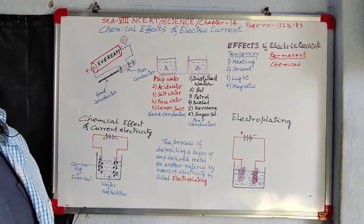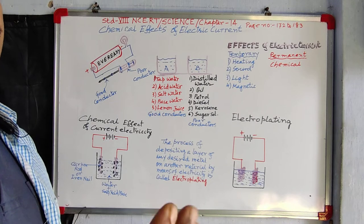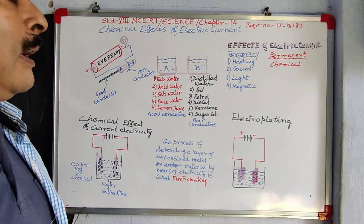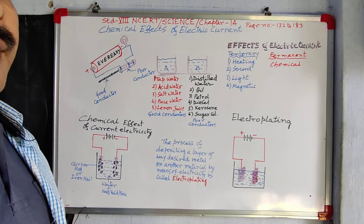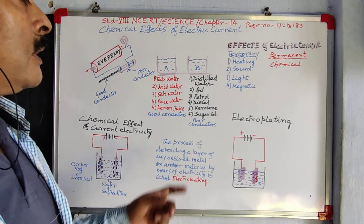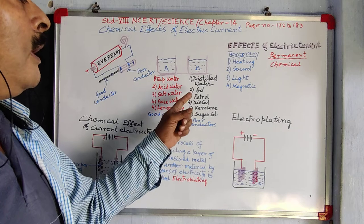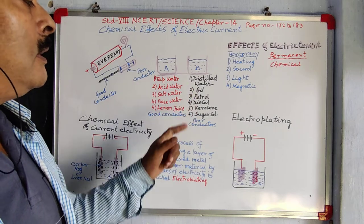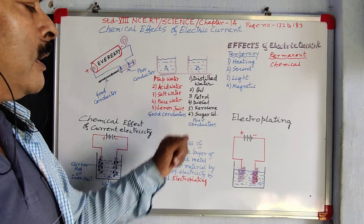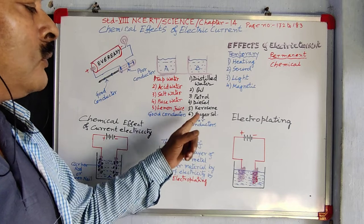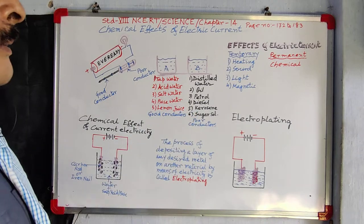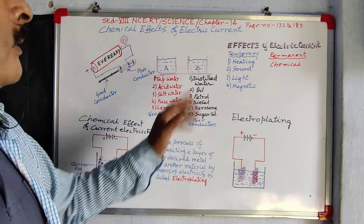Also in pot B: any edible oil — mustard oil, groundnut oil, cashew nut oil, olive oil — and petrol, diesel, kerosene, and sugar solution — water with sugar.